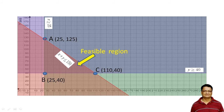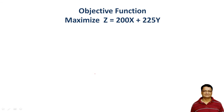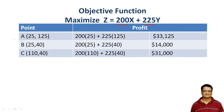A feasible solution satisfies all constraints, and the optimum solution is the one among all feasible solutions that gives maximum profit. It is well known that the optimum solution lies at one of the vertices, so we evaluate the objective function — maximize 200x + 225y — at points A, B, and C to find the maximum value.